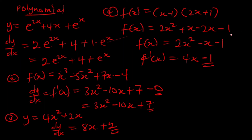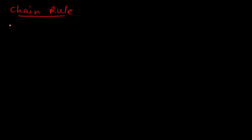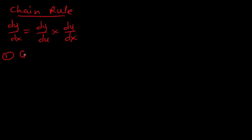We can also use the chain rule approach to solve such questions. The formula for the chain rule can be written as: dy/dx equals dy/du times du/dx. These two du terms cancel out to give dy/dx back. For example, we are given y equal to 3u squared plus 1, and u equal to 4x squared plus 1. We have to find: (a) dy/du, (b) du/dx, and (c) dy/dx.